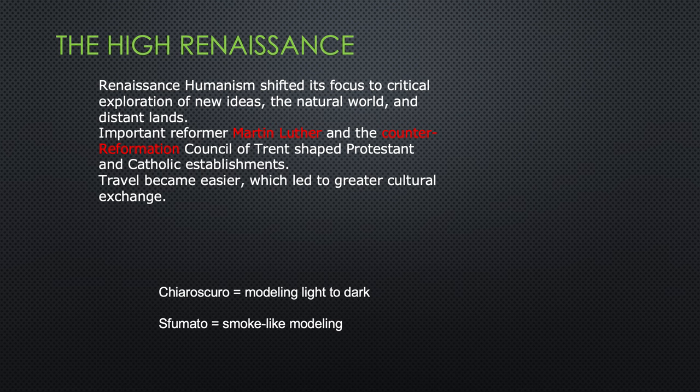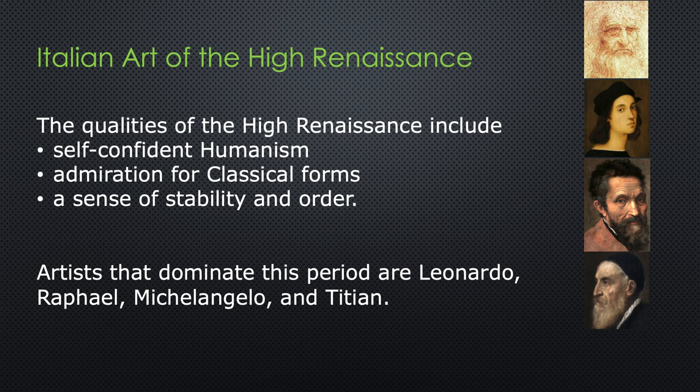A couple of vocabulary words: chiaroscuro, which means modeling light to dark — it's an Italian word literally meaning 'light dark' — and sfumato, which is smoke-like modeling. Today's lecture begins by looking at the three giants of Renaissance art. The qualities of the High Renaissance include self-confident humanism, admiration for classical forms, and a sense of stability and order. Artists that dominate the period are Leonardo, Raphael, Michelangelo, and Titian.